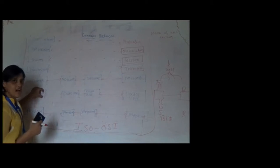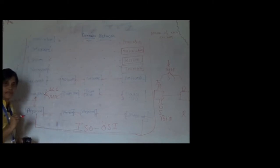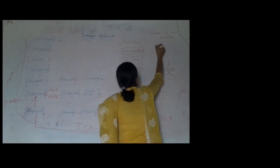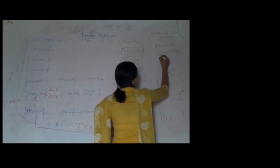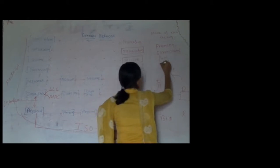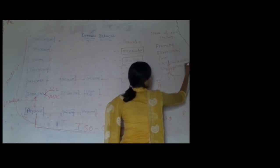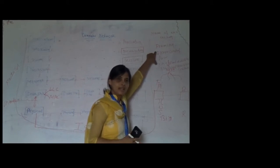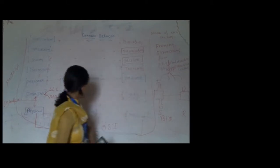The data link layer is divided into two sub-layers: the first is Logical Link Control (LLC) and the second is MAC — that is, Medium Access Control sub-layer. The responsibilities of the data link layer are: framing, error control, flow control, physical addressing, and shared medium control. The first four responsibilities are handled by the logical link control, and some part of framing as well as shared medium control is done by the MAC layer.